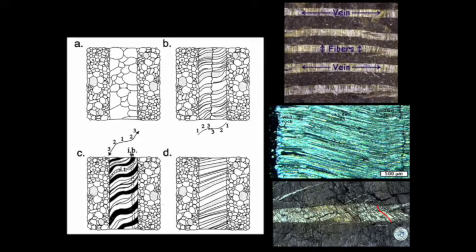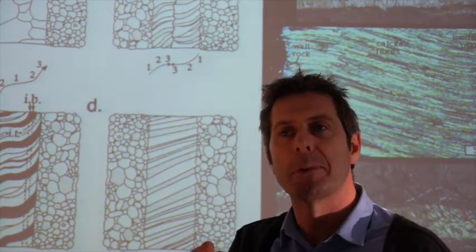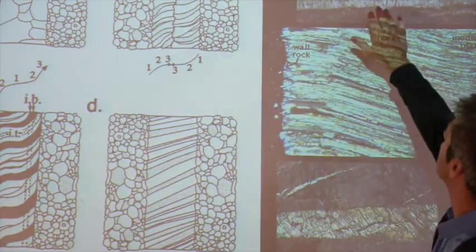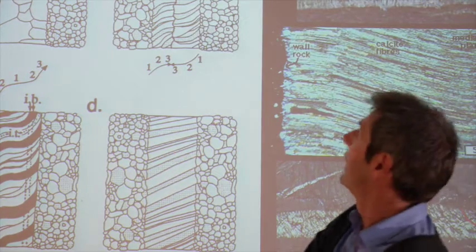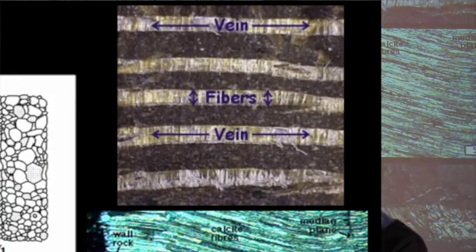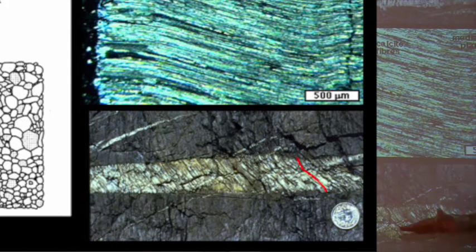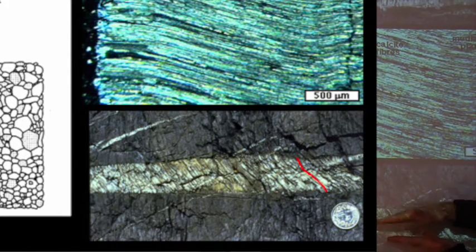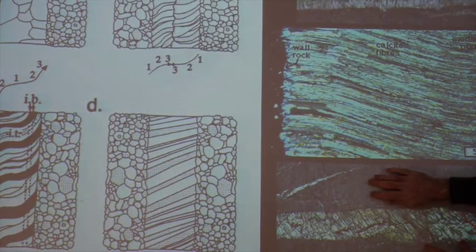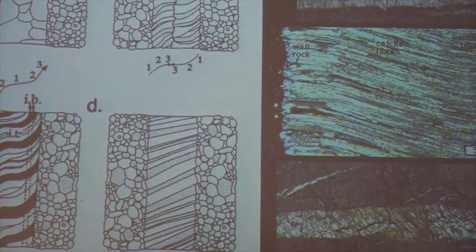Veins have history, and if you get a vein with fibrous growth you can start to read it. This simple example shows a series of layers with fibres at 90 degrees — that's just pure dilation. In this bottom one, you can see it's opened with some degree of shear, so there's been displacement — left lateral, with a little opening and movement to the left relative to the bottom.